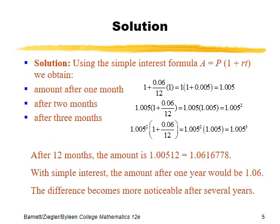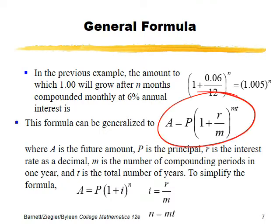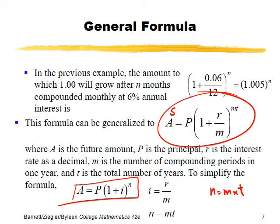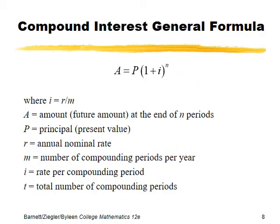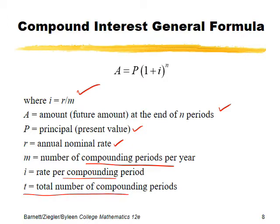We can skip the derivation and jump directly to the formula. In the book they denote it by A; we use S to differentiate, since in simple interest we already used A. Here n represents the total number of compounding periods, which equals m times t, and i equals r divided by m. So the short form of the formula is S = P(1+i)^n, where i is rate per compounding period, n is total compounding periods, p is principal, r is the nominal interest rate, and m is compounding periods per year.